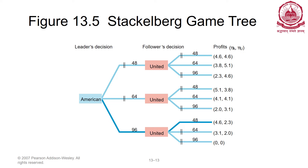Given these three scenarios, American Airlines can decide which leads to the best payoff. For 48, American gets 3.8 million; for 64, it gets 4.1 million; for 96, it gets 4.6 million. So American will choose 96, and United will take 48,000 passengers, leading to a profit of 4.6 million for the leader. This demonstrates the leader's advantage of deciding based on available information.